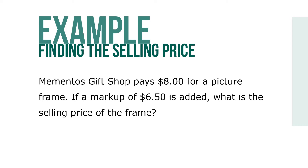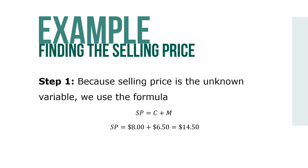Here's an example. Memento's gift shop pays $8 for a picture frame. If a markup of $6.50 is added, what is the selling price of the frame? Because the selling price is the unknown variable, we use the formula SP equals C plus M. So $8 plus $6.50 equals a total selling price of $14.50.